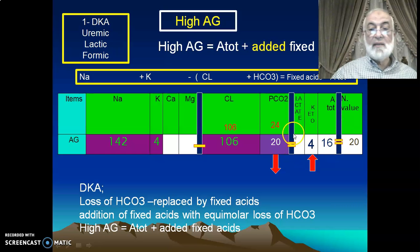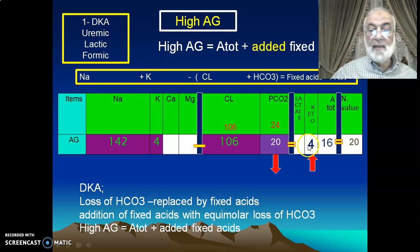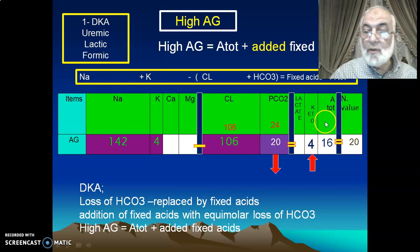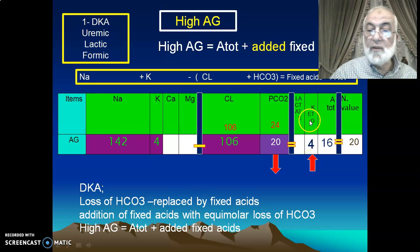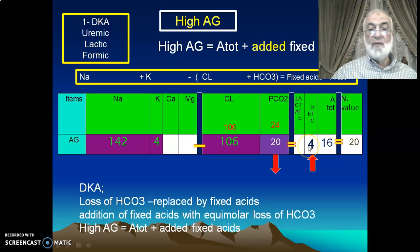There is an increase in fixed acid, that's why the anion gap is high. High anion gap means fixed acids are being added. As we mentioned, anion gap equals total weak acid plus fixed acid. Normally the fixed acid is zero, but now it is increased — that's why the anion gap increased.